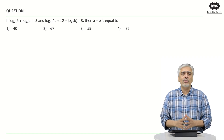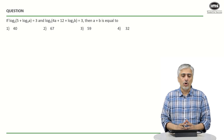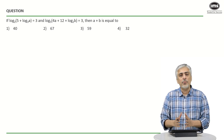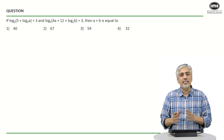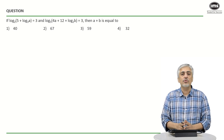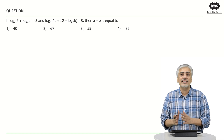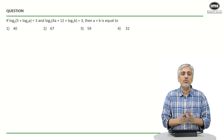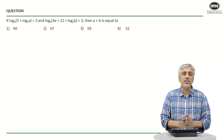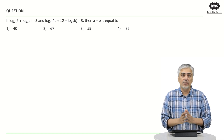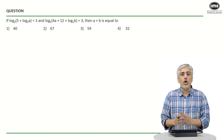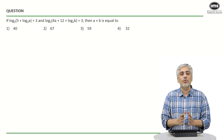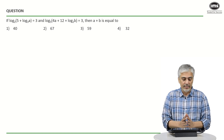Let's have a look at the next question — again a question from logs. If you look at the options, all the answers are whole numbers, which means you use the same logic we've been talking about in the earlier videos: convert logs to indices, and you should be able to do the question pretty easily.